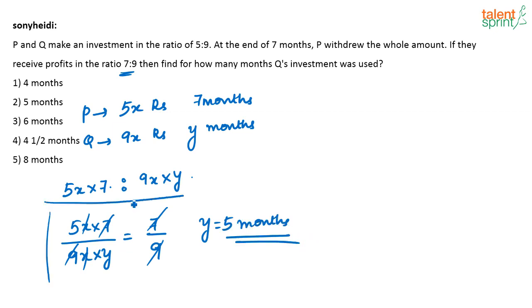This is the only step you have to write to arrive at the answer. So 5 months is your answer — option 2. Very easy question, just a one-step solution. That is all.